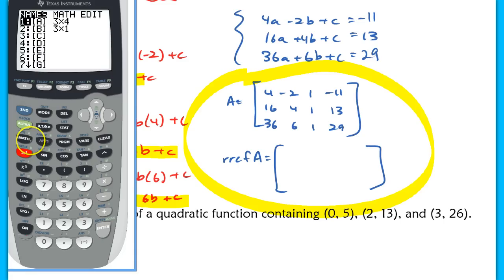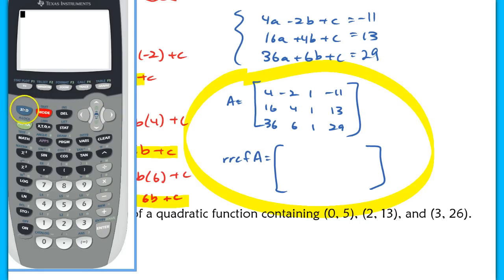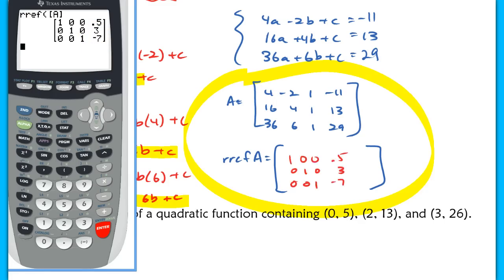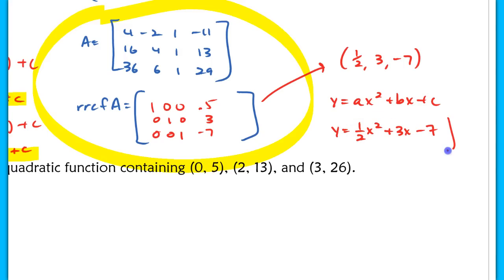After row-reducing, the result tells us a = 1/2, b = 3, and c = −7. Substituting these back into standard form, our quadratic equation through the three given points is y = (1/2)x² + 3x − 7.